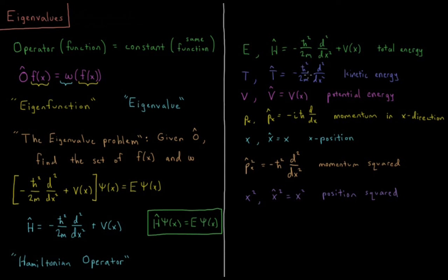We can find subcomponents of the kinetic energy operator. Kinetic energy is p squared over 2m — momentum squared over 2 times mass. The kinetic energy operator is negative h-bar squared times the second derivative with respect to x, all over 2m. The momentum operator for momentum in the x-direction is the square root of that: negative i h-bar d/dx. So if you want to know the momentum of a particle, you multiply by negative i h-bar and take the first derivative with respect to x. For position, the x operator is simply multiply by x, and the x-squared operator is just multiply by x squared.